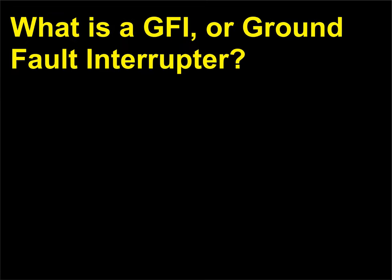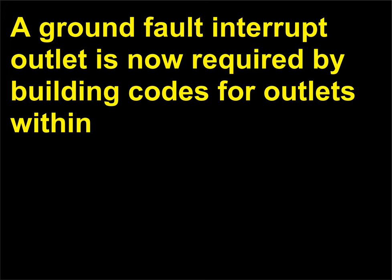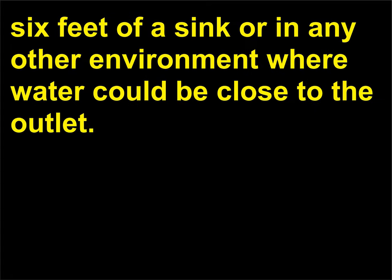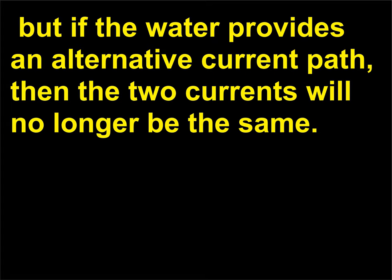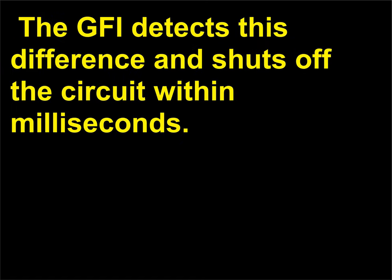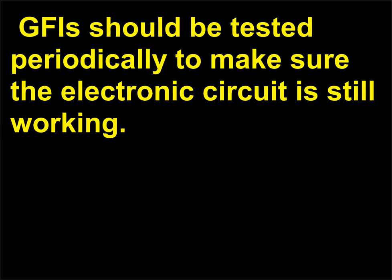What is a GFI, or ground fault interrupter? A ground fault interrupter outlet is now required by building codes for outlets within six feet of a sink or in any other environment where water could be close to the outlet. Normally the currents in the black and white wires will be equal, but if water provides an alternative current path, then the two currents will no longer be the same. The GFI detects this difference and shuts off the circuit within milliseconds. GFIs should be tested periodically to make sure the electronic circuit is still working.